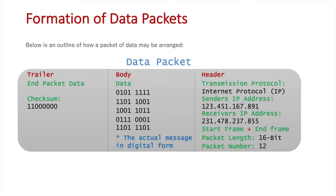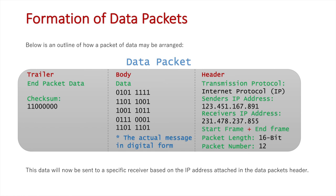If that checks out correctly, the packet is confirmed as correct. We then send the data off to the specific IP address designated as the receiver's. I hope this gives you an understanding of the formation of data packets — essentially, it's not just the message being sent. There is a lot of information in the header and trailer that ensures the message is sent to the correct location, that the rules of the network are followed, and that the message gets to its destination correctly.